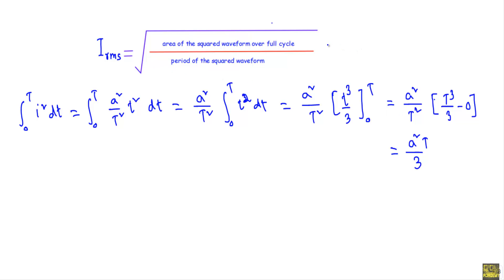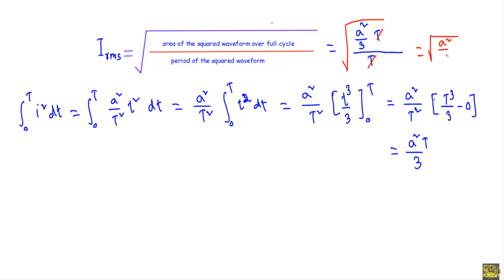From this I can write A² · T / 3. So the area under the squared waveform over the full cycle equals A²T / 3. Dividing by the period T and taking the square root, the T cancels with T, leaving the square root of A² / 3, which equals A / √3. Therefore the RMS value of the given sawtooth or triangular waveform is equal to A over root 3.